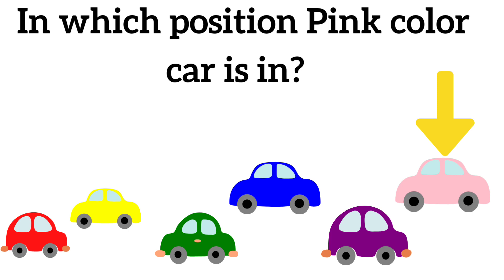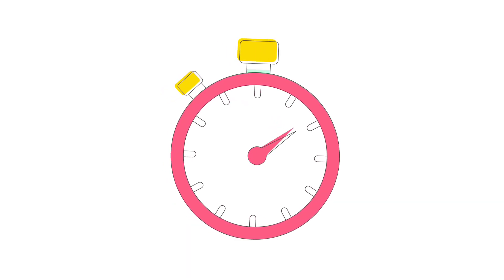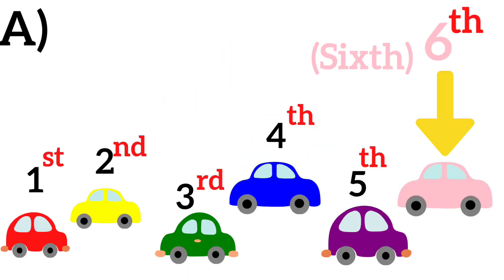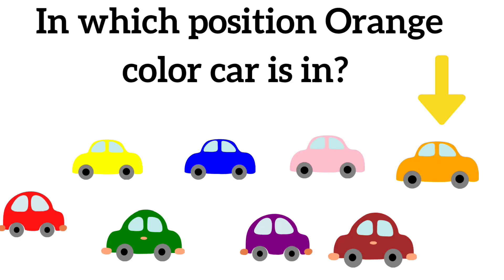Here is your second question: In which position is the pink color car placed? Time starts. Time up. Answer is 6th position. Pink color car is placed in 6th position. Third question: In which position is the orange color car placed?